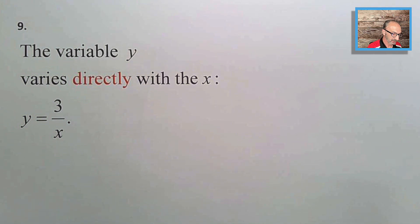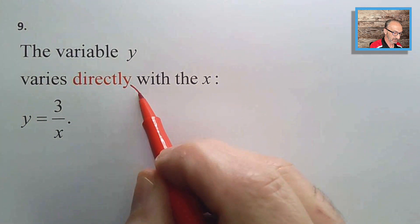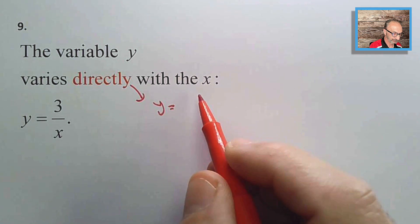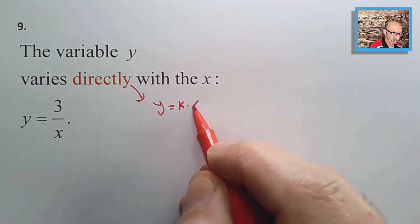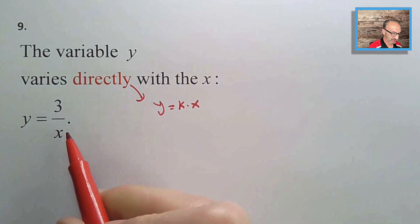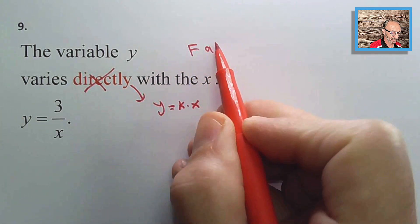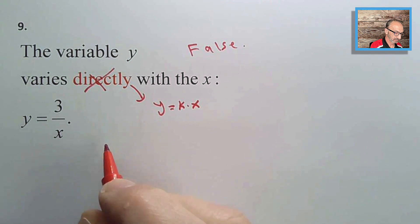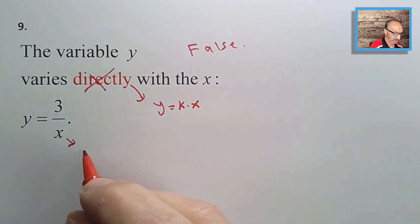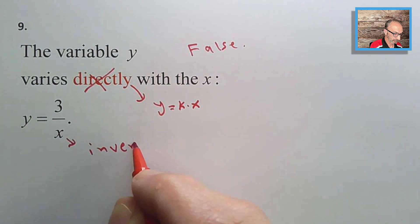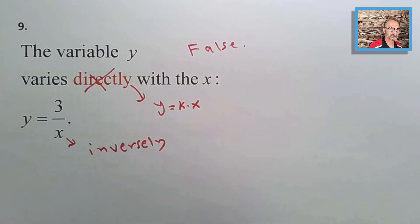Number nine: the variable y varies directly with x — true or false? If it varied directly it would be y = k·x. The given relationship varies inversely, not directly. The statement is false.